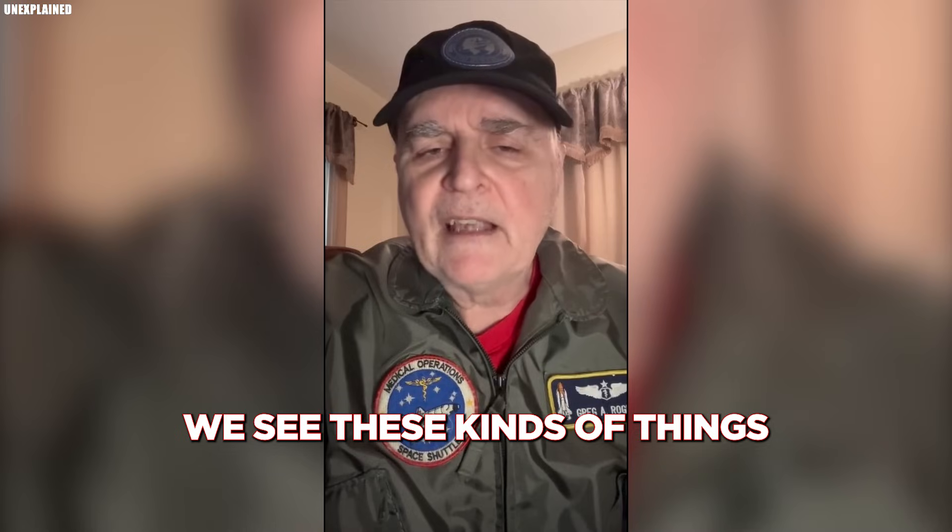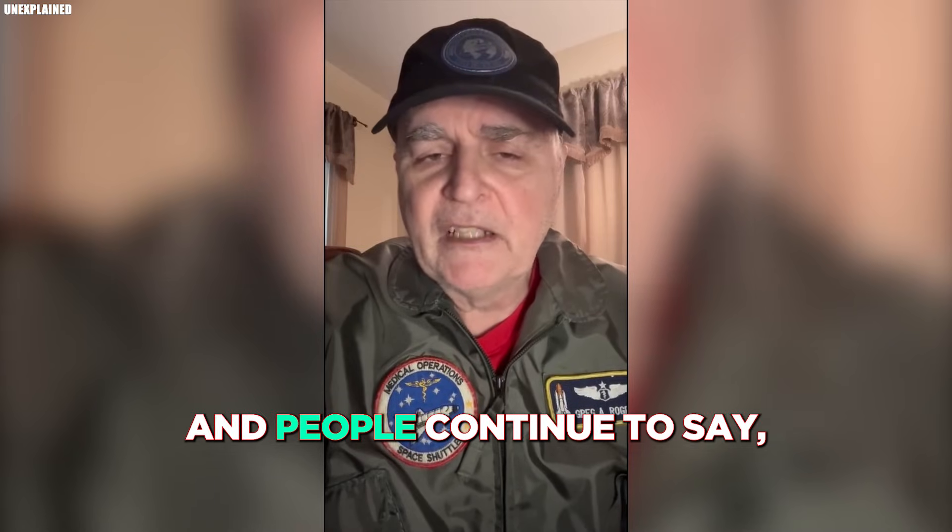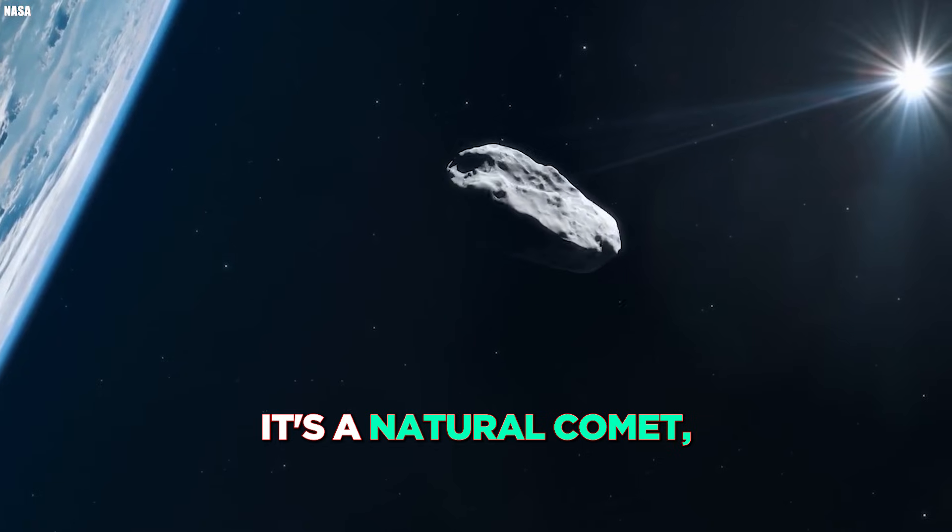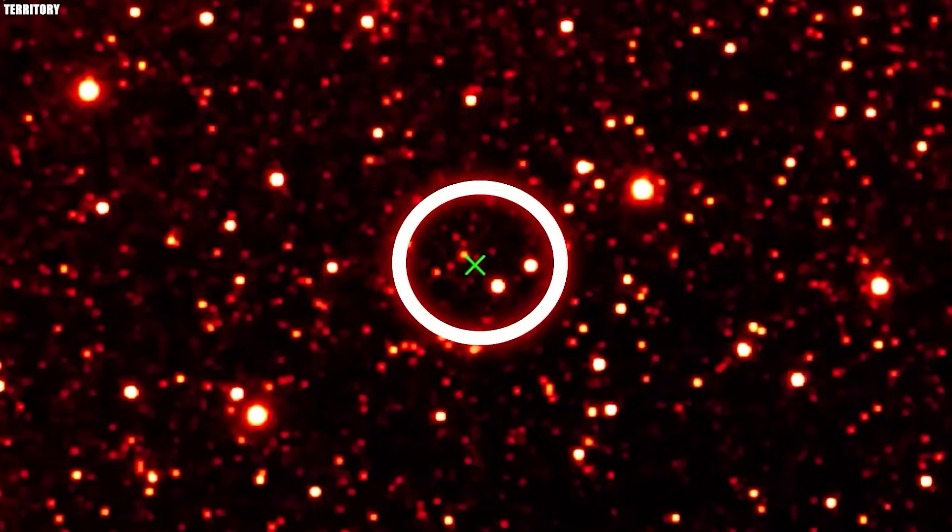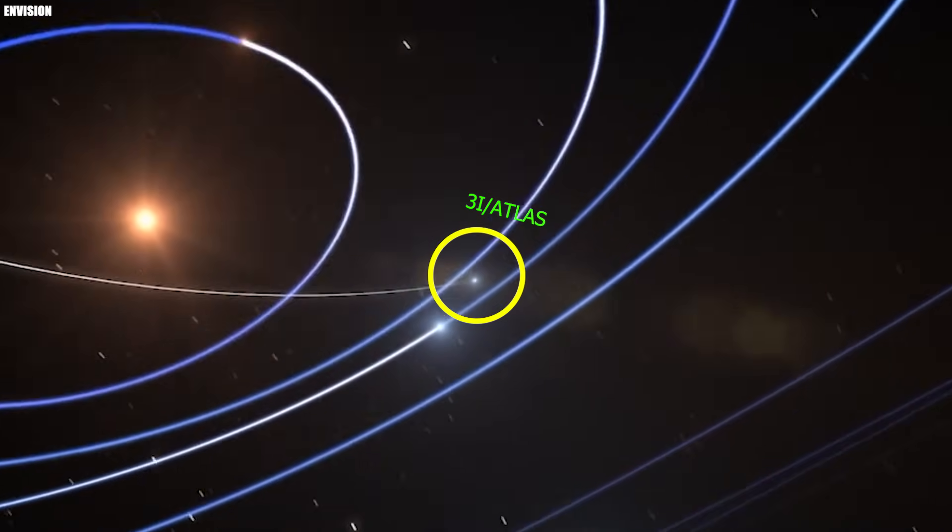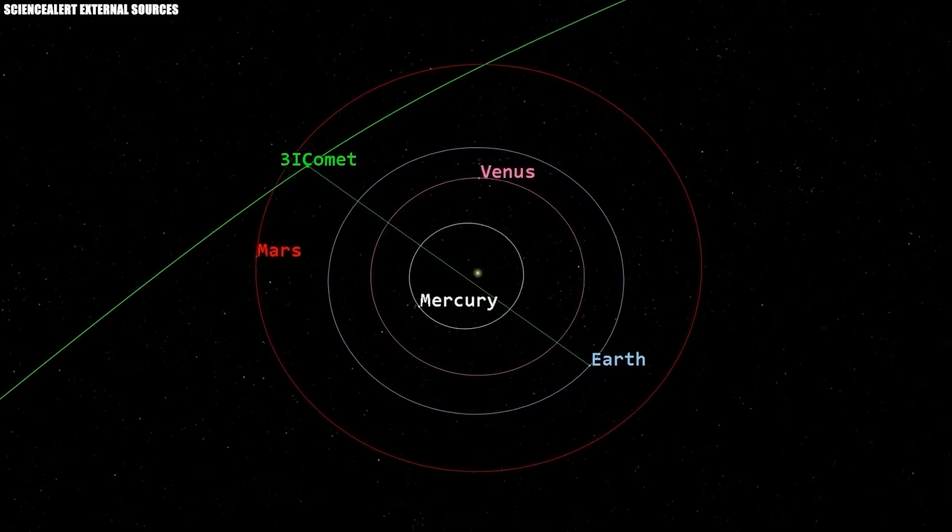We see these kinds of things and people continue to say, oh, it's just a comet. It's a natural comet, except that it's not doing natural things. This is no longer about a comet acting weird. We may now be looking at the first interstellar object to show engineered behavior.